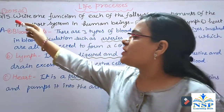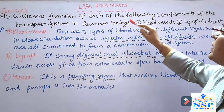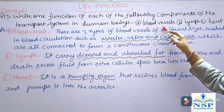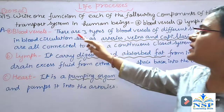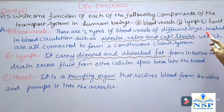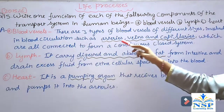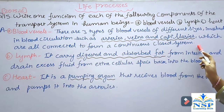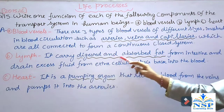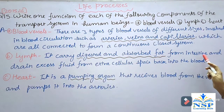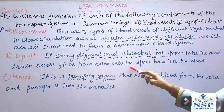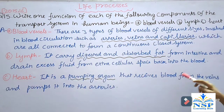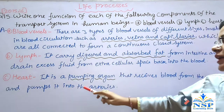Question number 15: Write one function of each of the following components of the transport system in human beings — blood vessels, lymph, and heart. Blood vessels: There are three types — arteries, veins, and capillaries — all connected to form a continuous closed system. Lymph: It carries digested and absorbed fat from the intestine and drains excess fluid from extracellular space back into the blood. Heart: It is a pumping organ that receives blood from the veins and pumps it into the arteries.